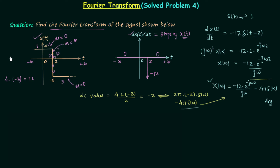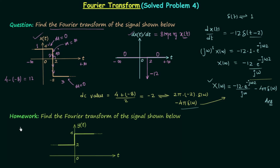And now we will move to the homework problem. In the homework problem you need to find the Fourier transform of the signal whose waveform is like this. Again signal YT is the combination of step signals, therefore you need to follow the same process and obtain the Fourier transform using the method of differentiation.